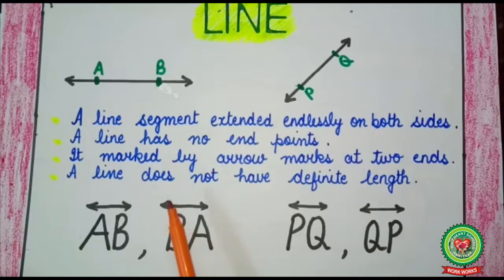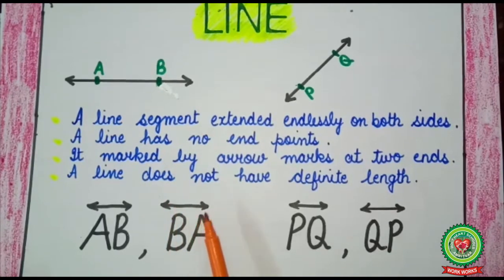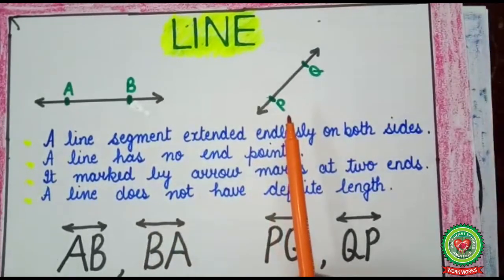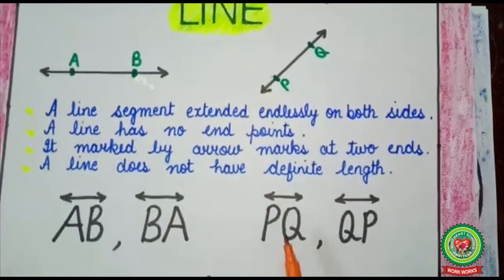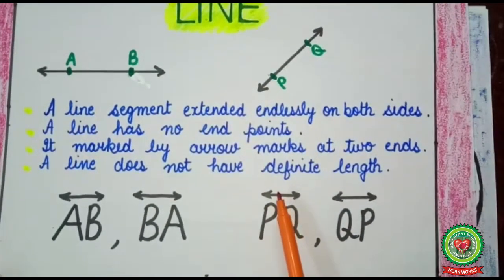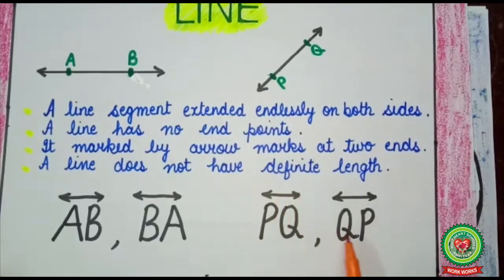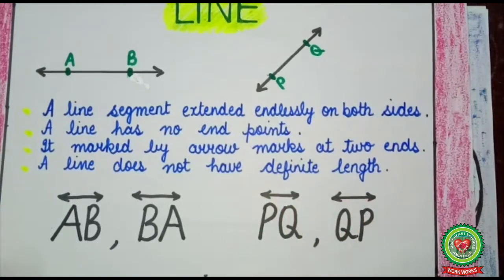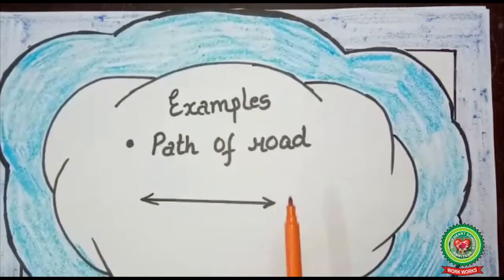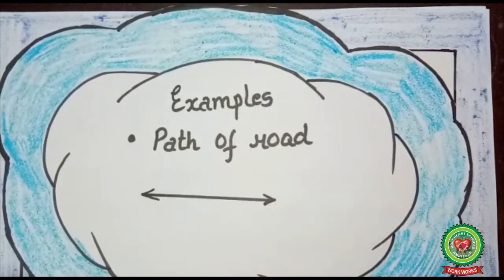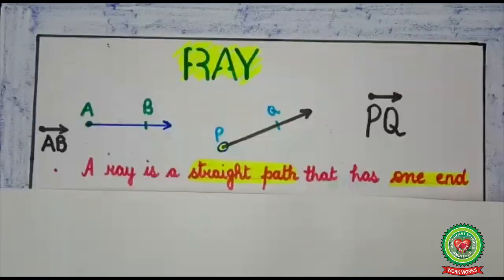Symbolically you can write it as AB with the symbol of arrow, or BA with the symbol of arrow. If I have taken another line PQ, you can name it PQ with the symbol of line, or QP with the symbol of arrow. An example of a line is the path of a road.